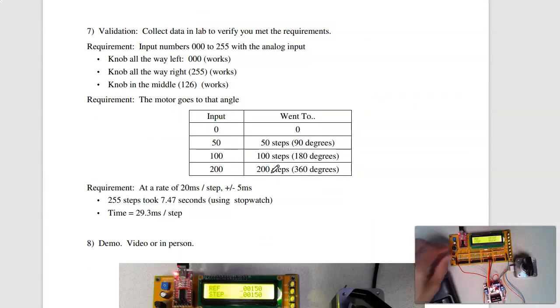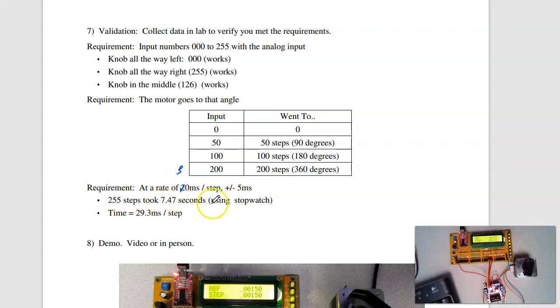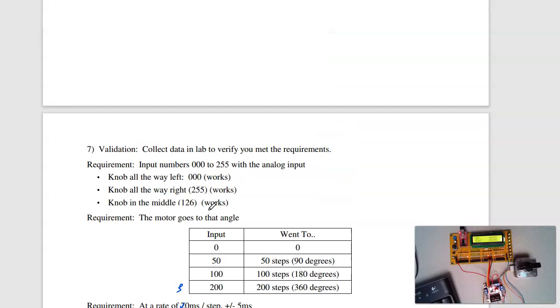For validation. Do kind of what I said. I was kind of demoing. I can check at zero, 50, 100, 200 steps. And it is stepping at the right rate. I can step, check these steps per second. It's supposed to be 30. I did 255 steps and 7.47 seconds measured with a stopwatch. 29 milliseconds per step. With my code, that's all the faster I can go.